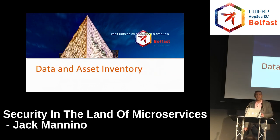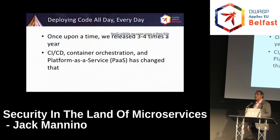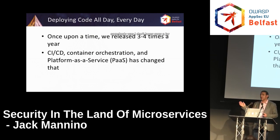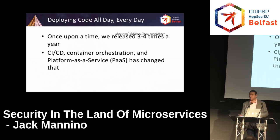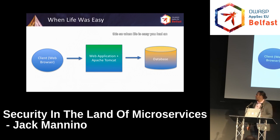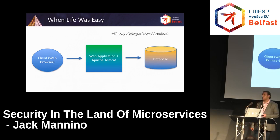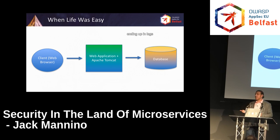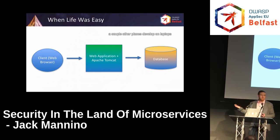Let's look at data and asset inventory and how this unfolds. Once upon a time in this perfect world we used to have, we released three or four times a year. We'd sign off on the release and somebody would copy a jar over to a server and we'd be on the internet. That's really changed with container orchestration platforms, continuous integration and delivery, and service features. When life was easy, you had a client talk to a web application talking to a database. Thinking about where data propagates throughout that architecture wasn't hard — it ends up in the database, maybe in logs somewhere, maybe on developers' laptops.